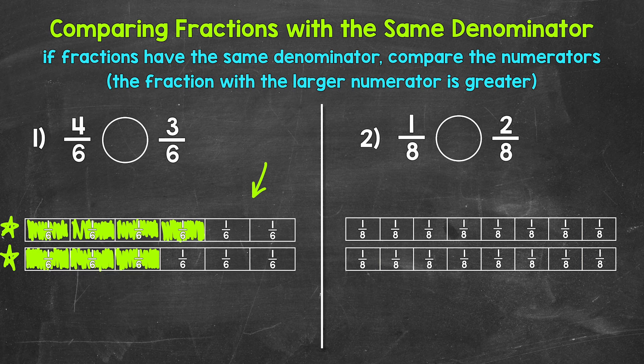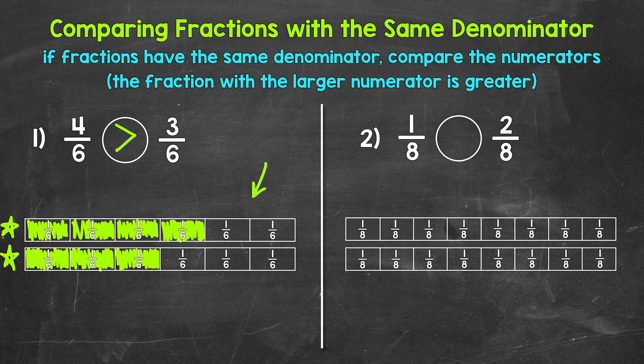Four-sixths is greater. Yes, the fraction strips help us see this, but also keep in mind, since the fractions have the same denominator — six — all we have to do is compare the numerators. Four is greater than three, so four-sixths is greater than three-sixths. Think about it: four equal parts out of six total is more than three equal parts out of six total. That makes sense. Now remember, our comparison symbol always opens up towards whatever is greater. So our symbol goes like this, and we can read our comparison from left to right as four-sixths is greater than three-sixths.